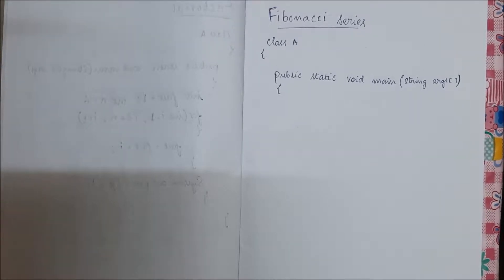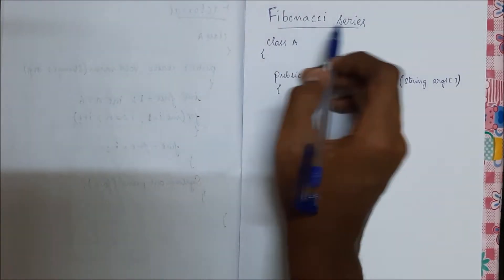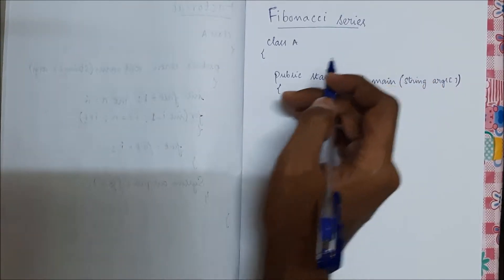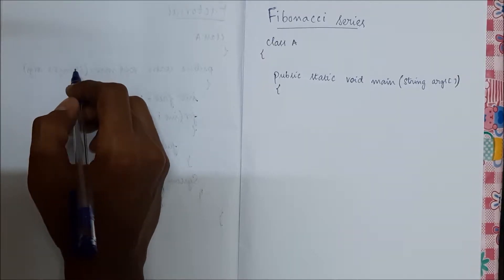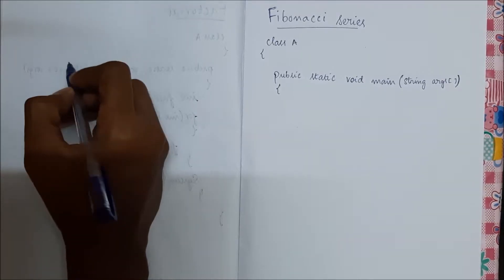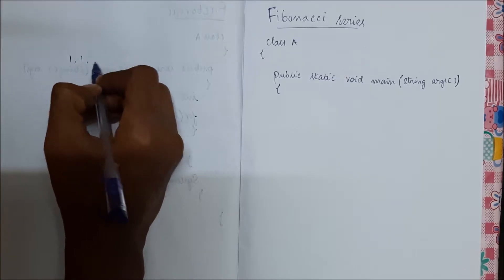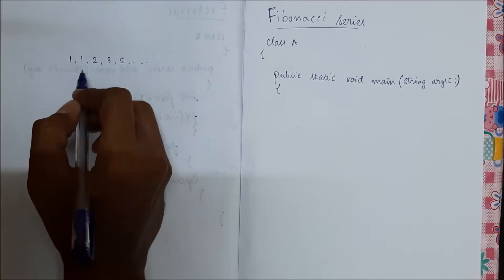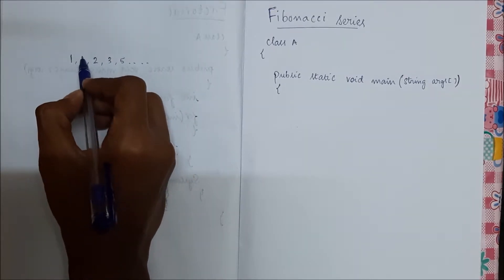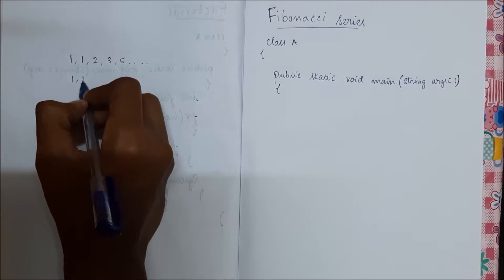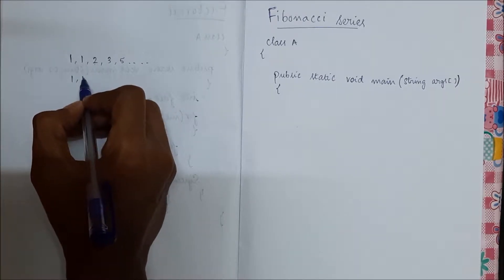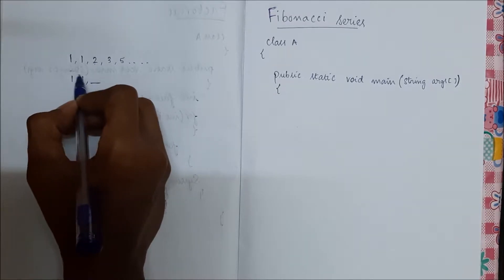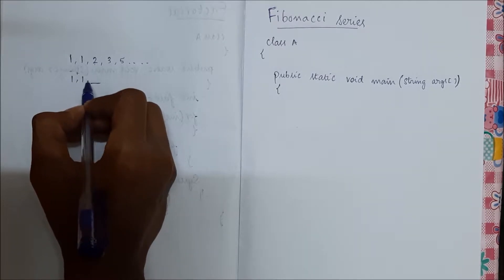Today I'll teach you how to print a Fibonacci series. A Fibonacci series looks like this: one, one, two, three, five, and so on. The first and second terms are one and one. The third term is the sum of the previous two terms, so one plus one is two.